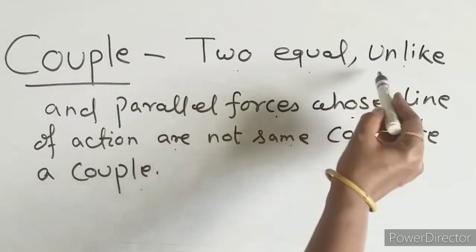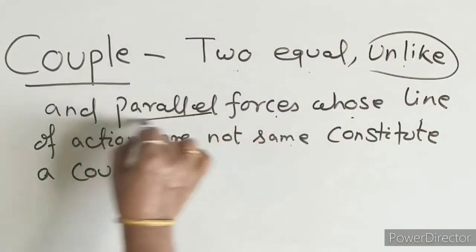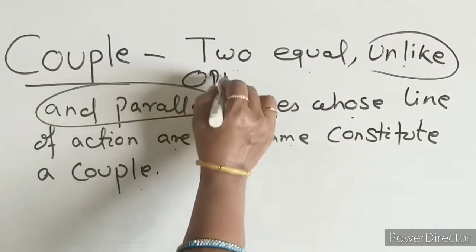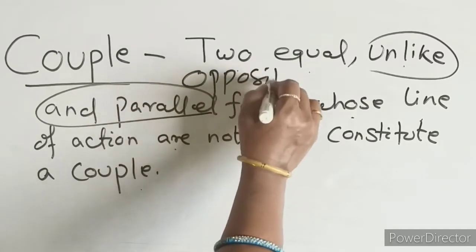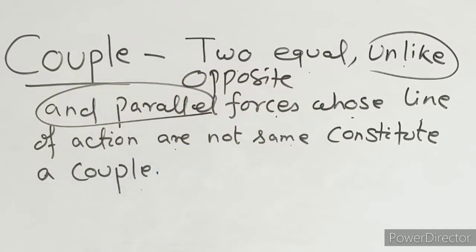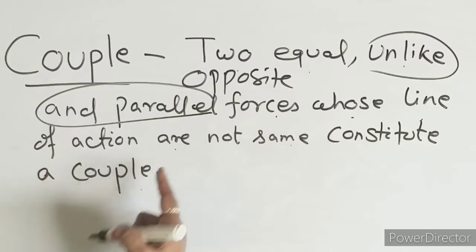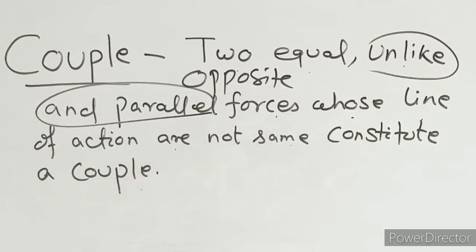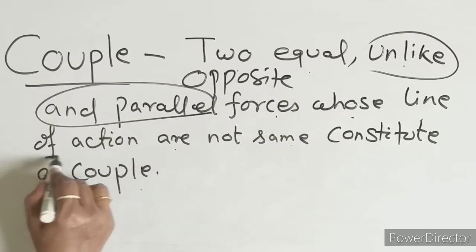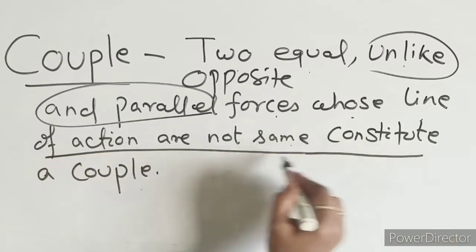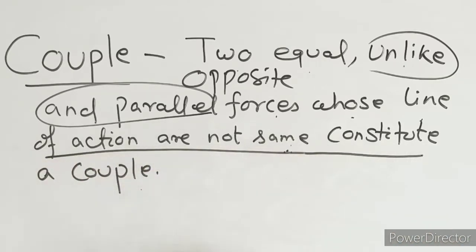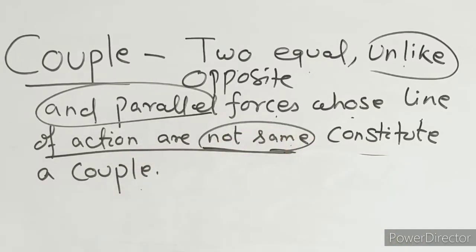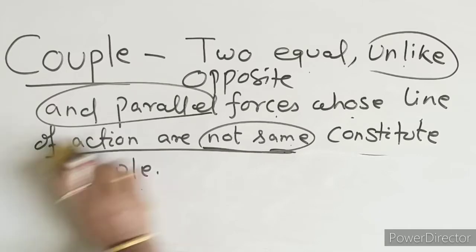Two equal, unlike, and parallel forces — also you can say two equal and opposite forces — whose line of action is not the same, constitute a couple. If you don't write that the line of action of force is not the same, you will lose marks. This is the most important point here.